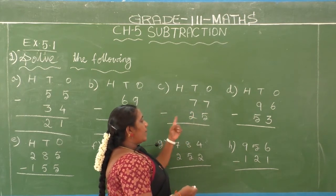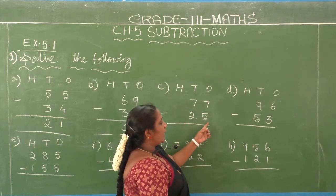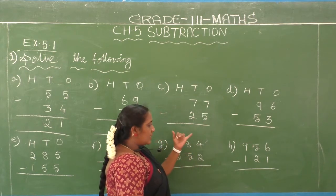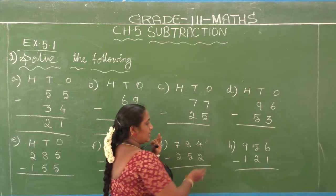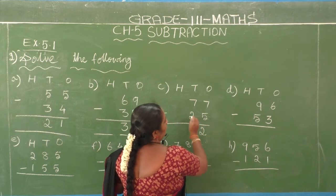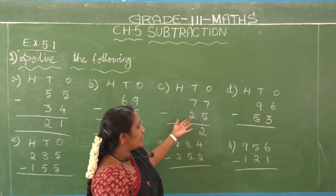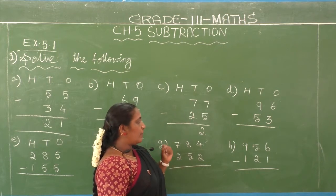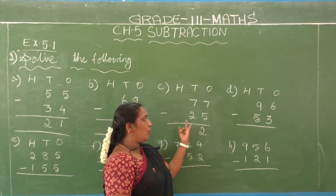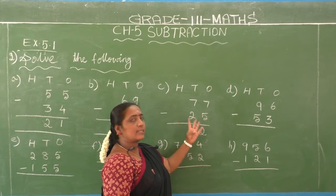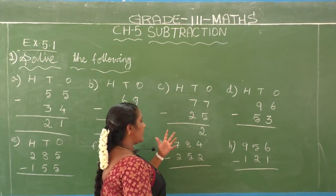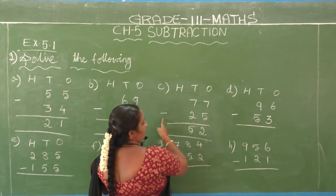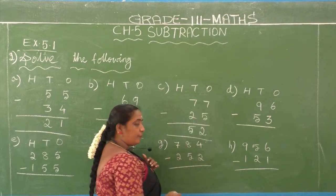C1: 77 minus 25. Ones place — second number is 5: 5 after 6, 7. Difference is 2. Tens place — second number is 2, first number is 7: 2 after 3, 4, 5, 6, 7. Difference is 5. So 77 minus 25 equals 52.